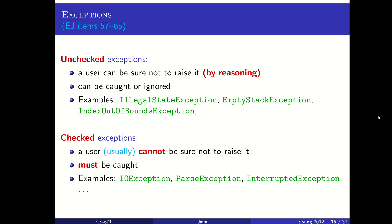Errors in Java programs are actually dealt with by a special kind of object called exceptions. You may have seen them before, but we'll try to get a little bit of a deeper understanding of how they work here. So there are two types of exceptions that we can look at: unchecked exceptions and checked exceptions.